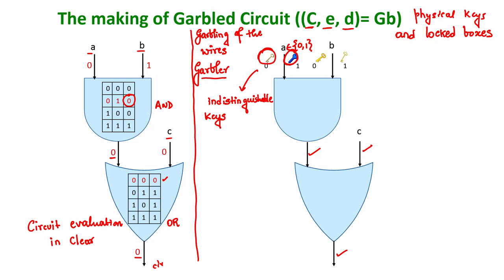Similarly, corresponding to wire B, the garbler assigns two indistinguishable random keys and only the garbler knows the labels. The output wire of the AND gate is likewise assigned two keys, one corresponding to value 0 and one to value 1. Wire C is also assigned two indistinguishable keys, and the output wire of the OR gate is assigned two indistinguishable keys with labels 0 and 1. That constitutes the garbling of the wires.